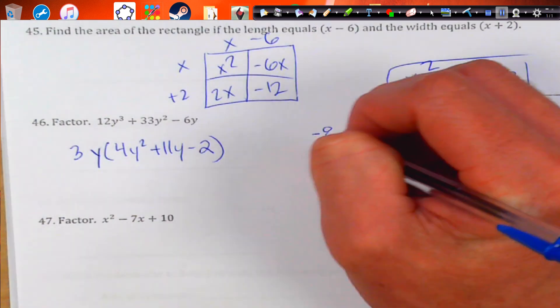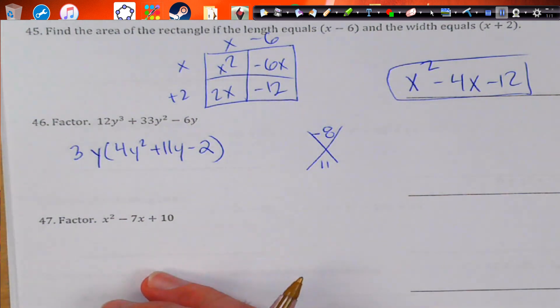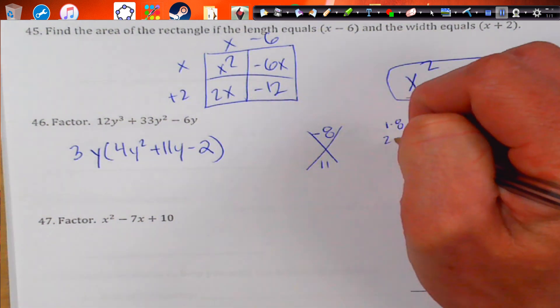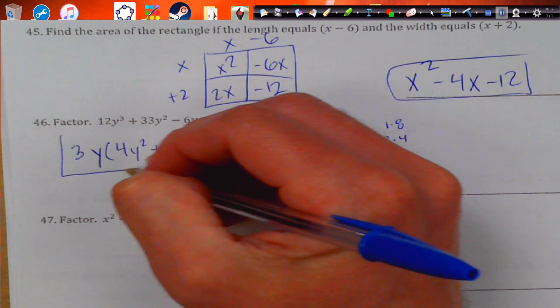4 times negative 2 is negative 8. And adds to 11. So, we got to think of factors that would multiply to negative 8 but add to 11. So, my factors are 1 and 8, 2 and 4. That's it. Nothing makes it to 11. So, this is actually fully factored.